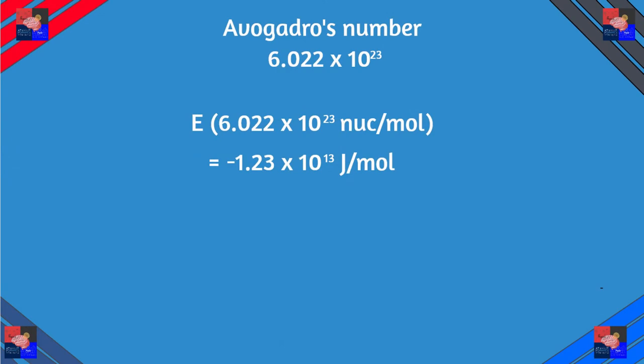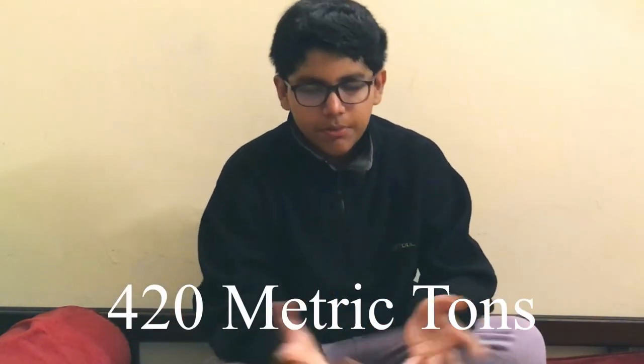So this is a minuscule amount of energy — nothing much, right? But plug that in with Avogadro's number for oxygen and you get negative 1.23 times 10 to the 13th joules per mole. To produce this much energy with coal in a factory, for example, it would take 420 metric tons of coal. This is huge — and that is what we mean by nuclear energy.